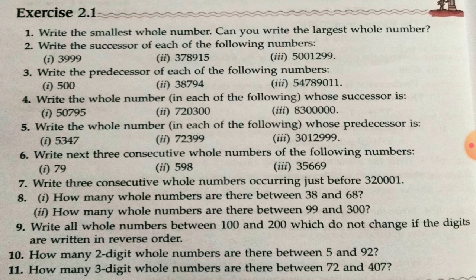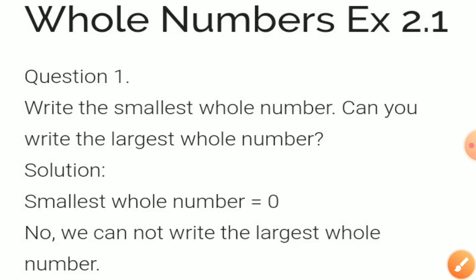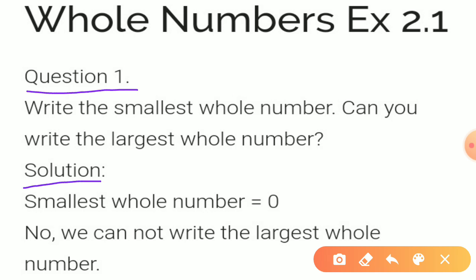What is the first question? Write the smallest whole number. Can you write the largest whole number? The smallest whole number is 0. As we learned in the first video, the smallest whole number is 0. And no, we cannot write the largest whole number.